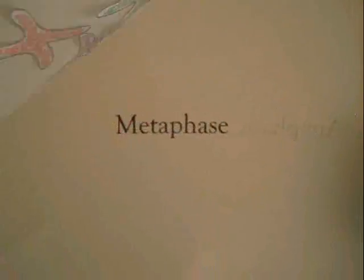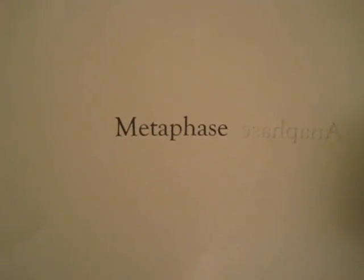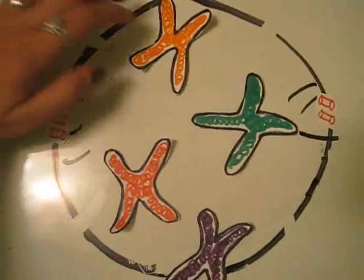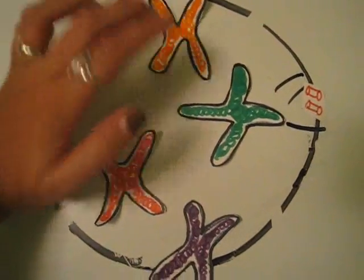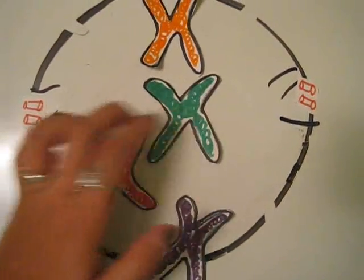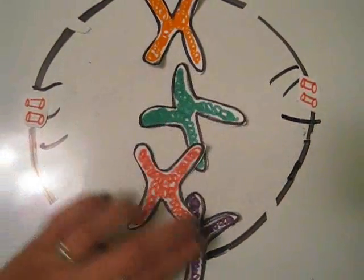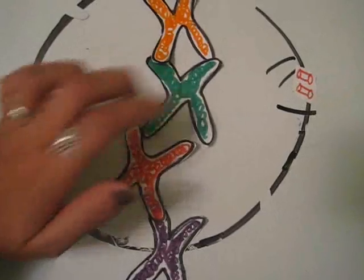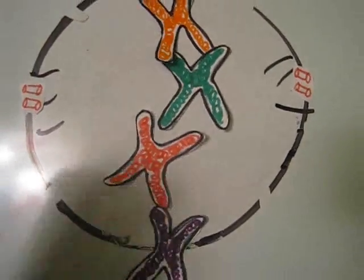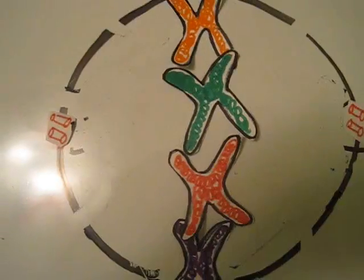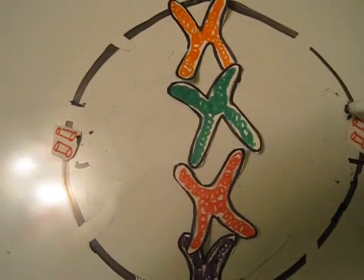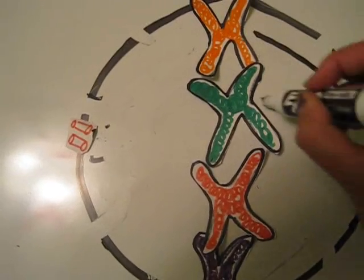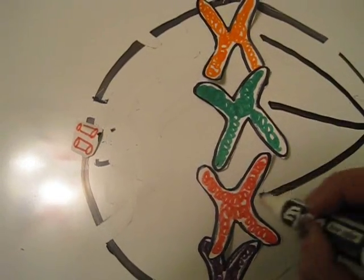The next phase is metaphase. Metaphase only lasts a few minutes and involves the chromosomes lining up in the center of the cell. The spindle fibers get longer and attach to the center of the chromosomes.